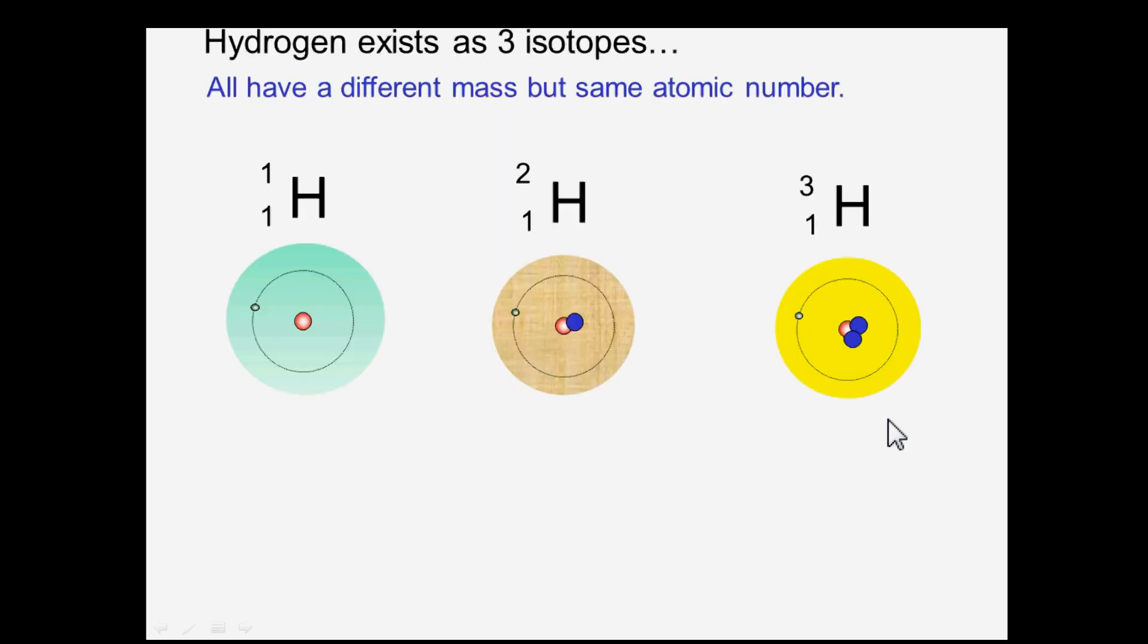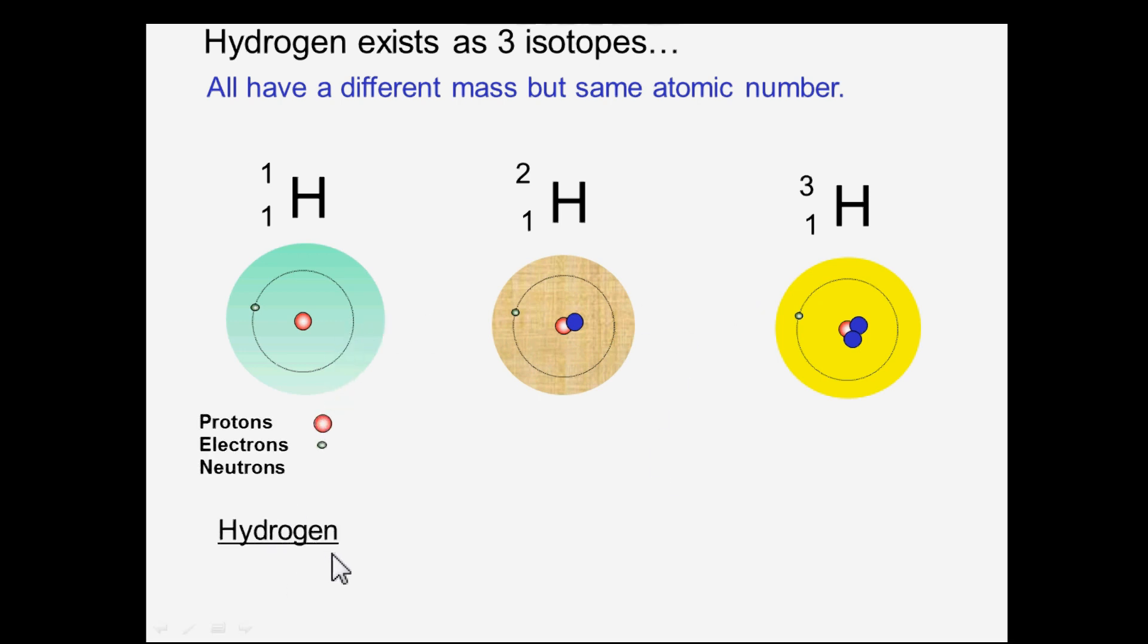There are three isotopes of hydrogen. All have different mass but the same atomic number. Hydrogen, also called protium, has only one proton and one electron. There is no neutron in this isotope.